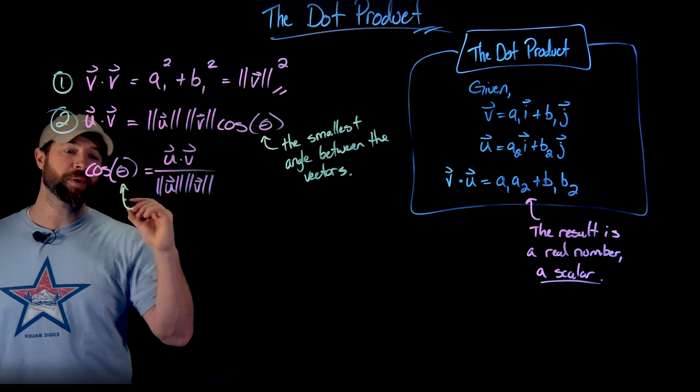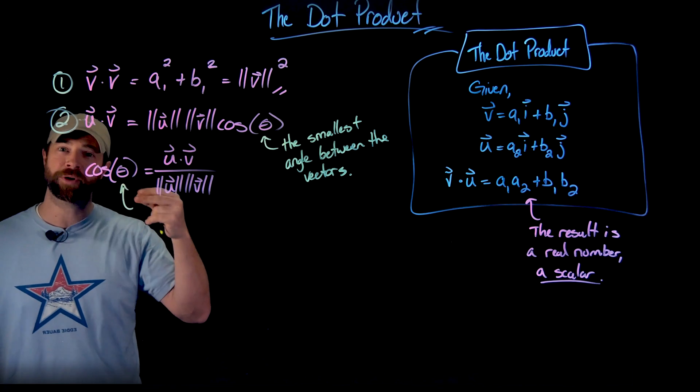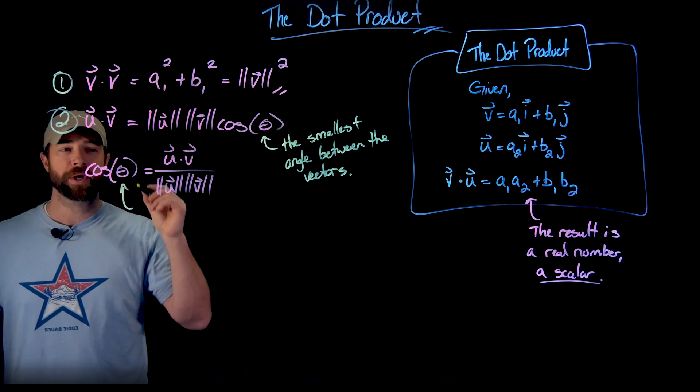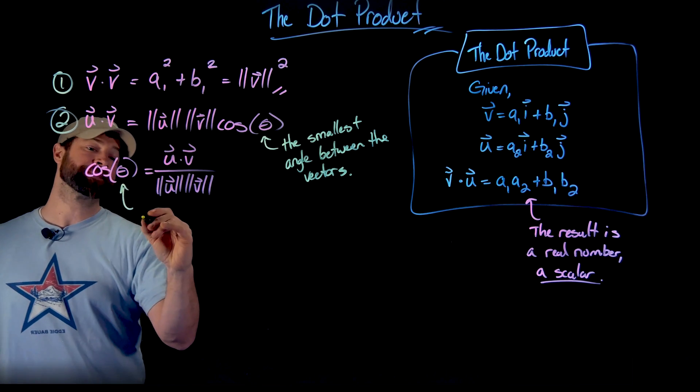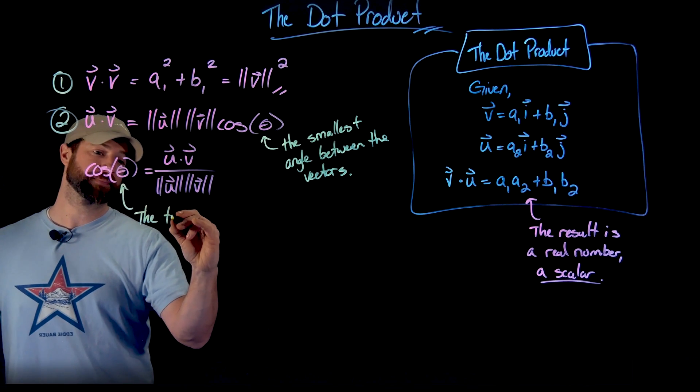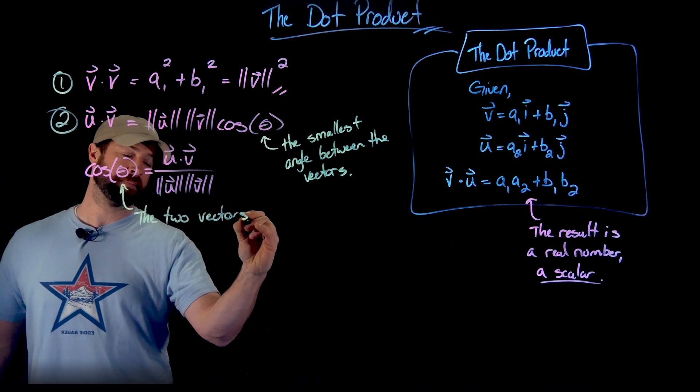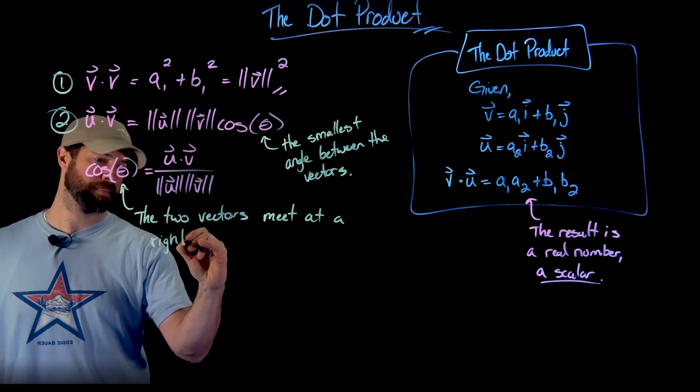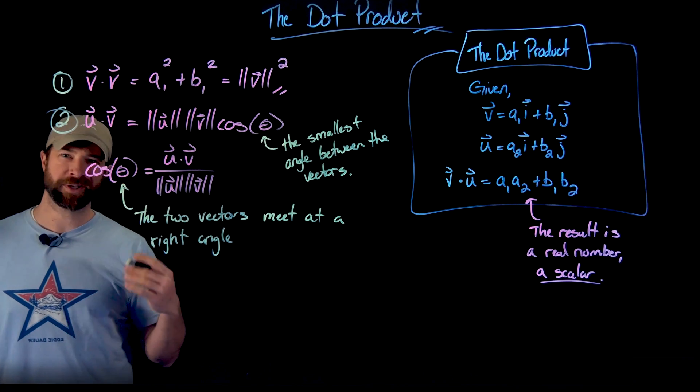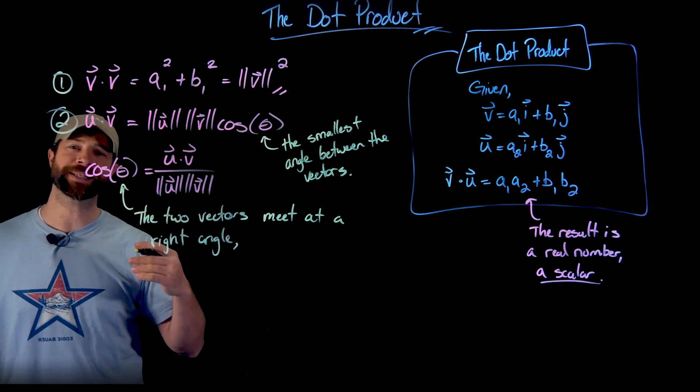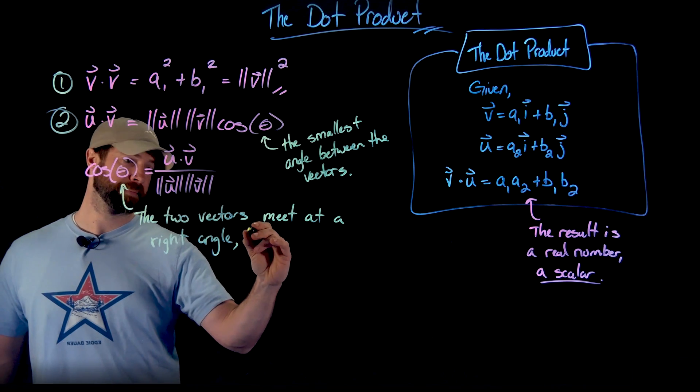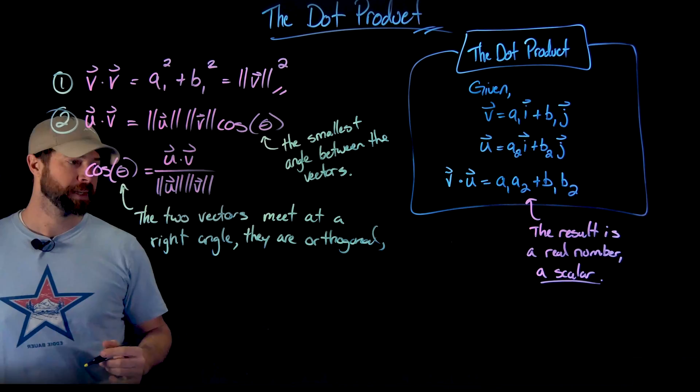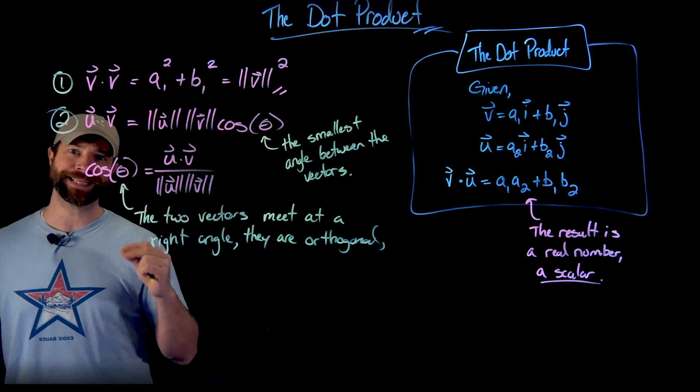And importantly, what we know is that if theta is a 90 degree angle or π over 2, the cosine of 90 degrees is zero. So what this statement means is that the two vectors meet at a right angle. By the way, just to offer some vocabulary here, we say the vectors are orthogonal if and only if the dot product is equal to zero.